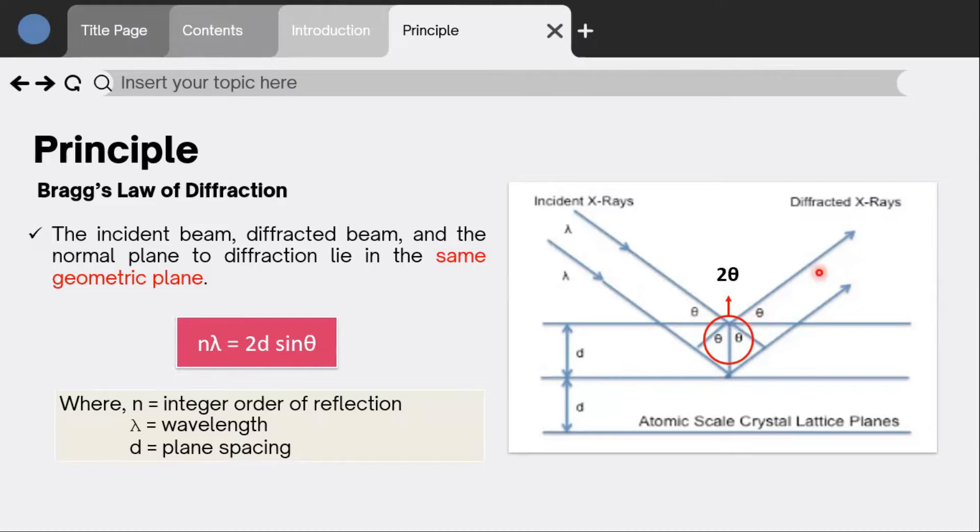The angle at which the incident beam forms when it hits the plane of the crystal and is reflected at the same angle is called 2 theta.